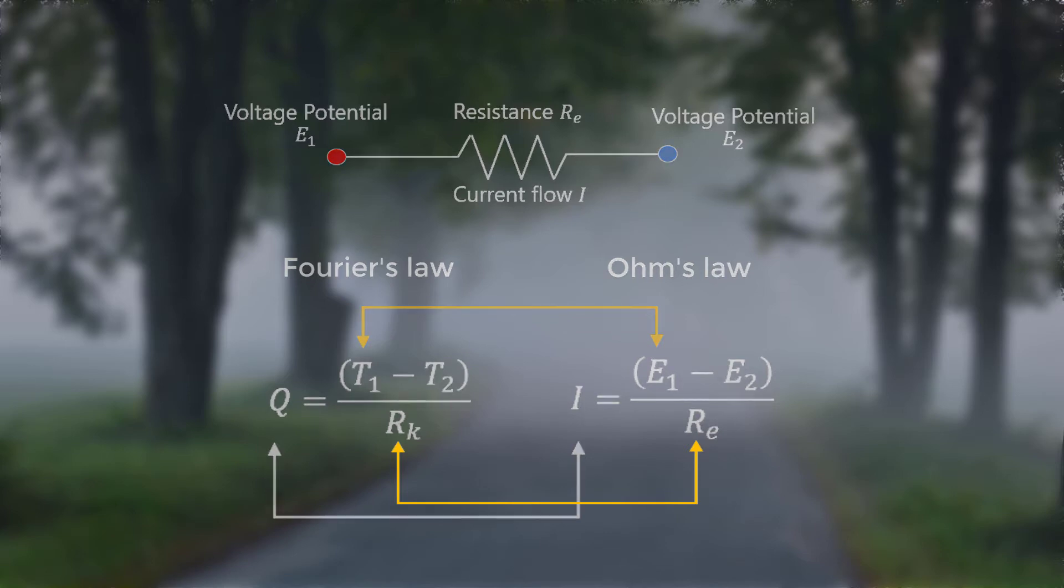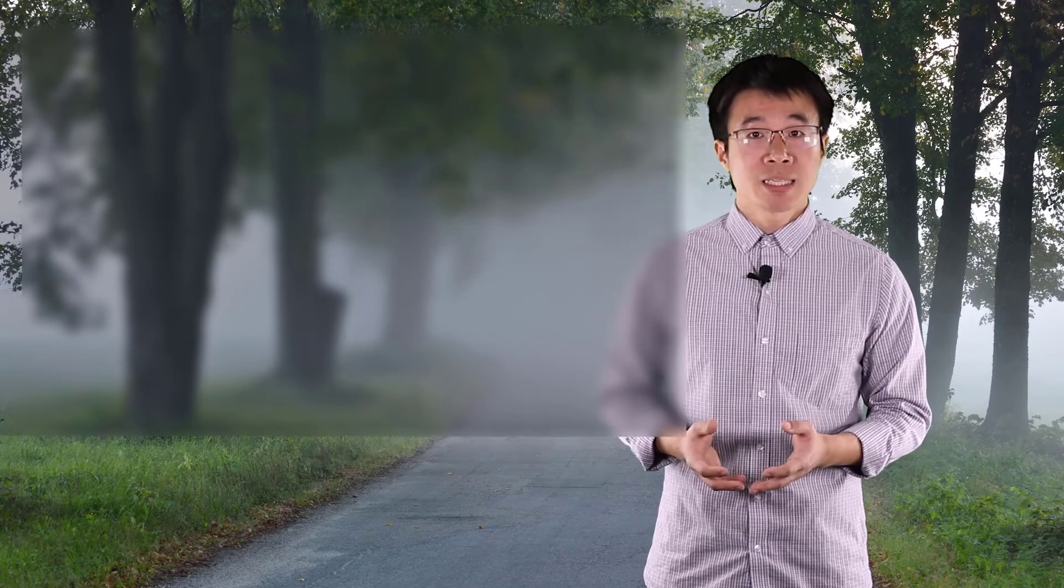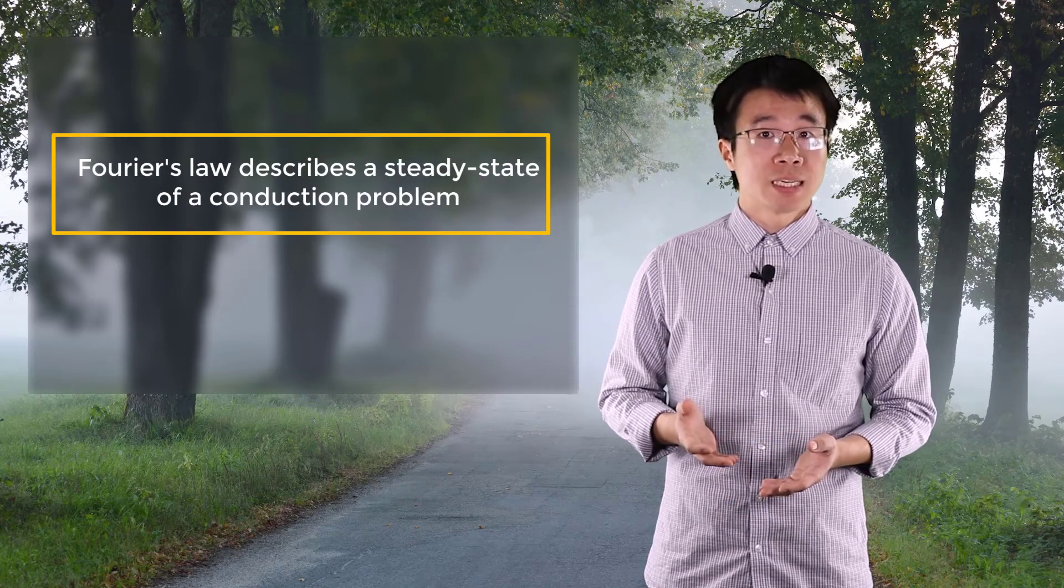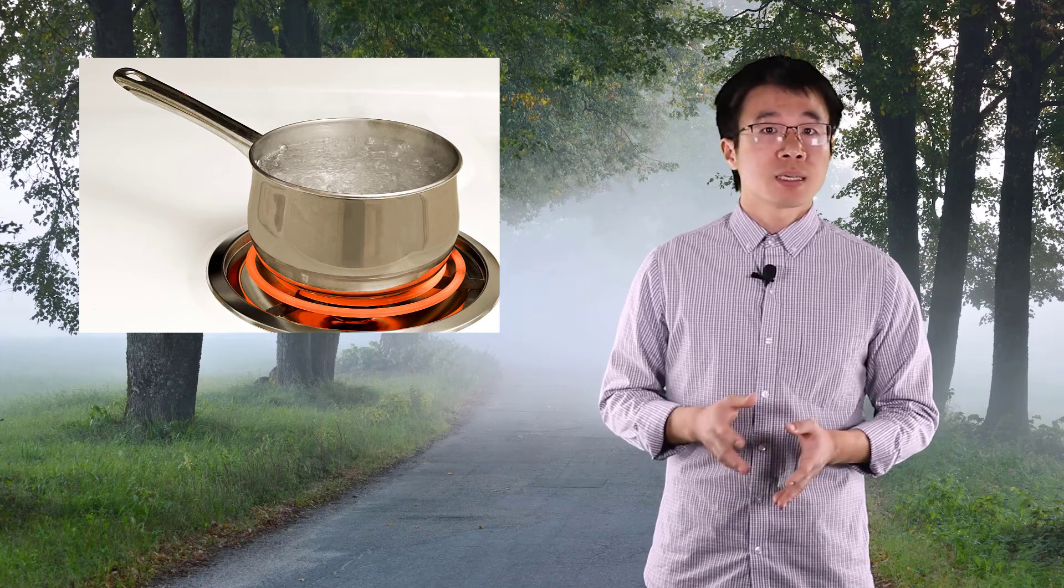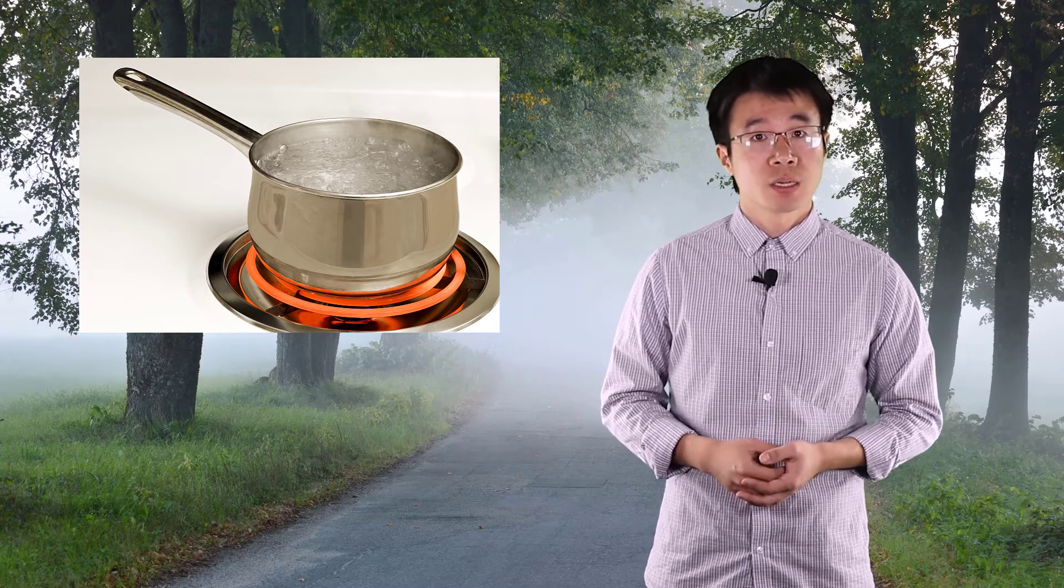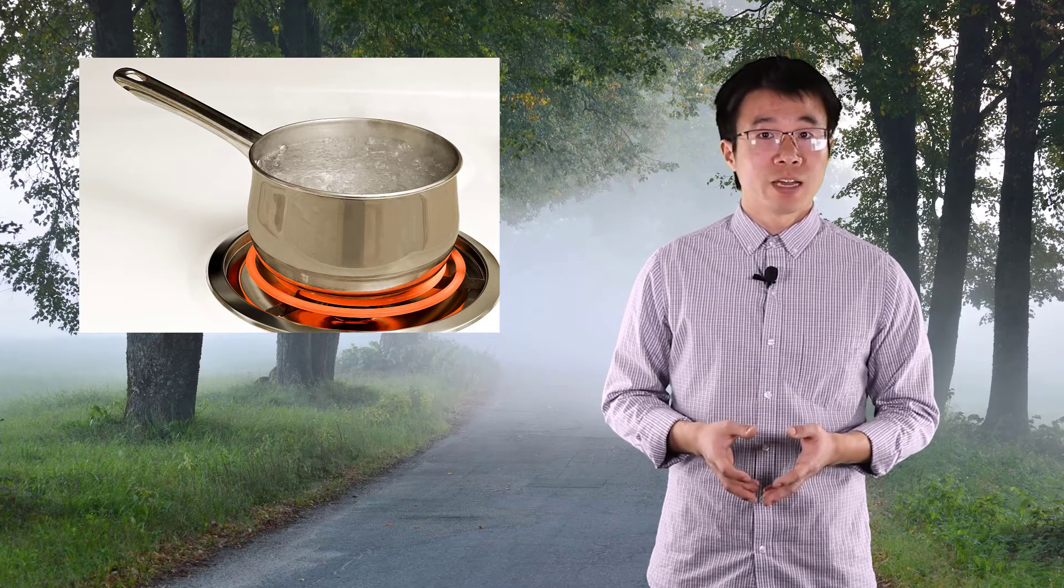Like Ohm's law, Fourier's law doesn't involve time and only describes the steady state of a conduction problem. To better illustrate the idea of steady state, let's take a look at this boiling pot on the stove. The pot is made of stainless steel in both the body and the handle. When the pot is on the stove for just 10 seconds, we know it's okay to touch the handle because heat hasn't been transferred to the handle yet. Now imagine someone forgot to turn off the stove and kept it on for an hour. When you notice it, will you move the pot without an oven glove? You probably won't, since after such a long time, the handle is nearly as hot as the body itself. And in this case, we say the pot has reached a steady state condition, since temperature is stable and no longer changing.